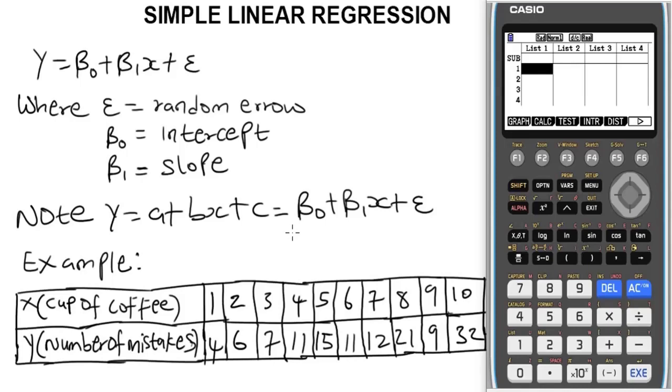Having known this, let's go ahead and solve this problem. We have the example: cups of coffee which are our x values, and number of mistakes which are our y values. Now let's input them serially. For x values we have one, two, three, four...